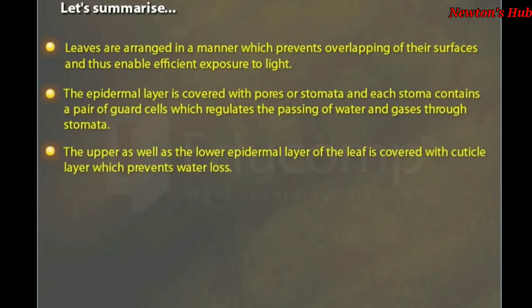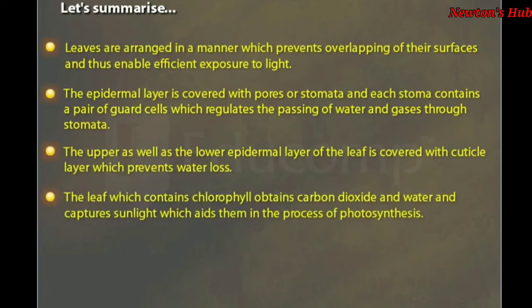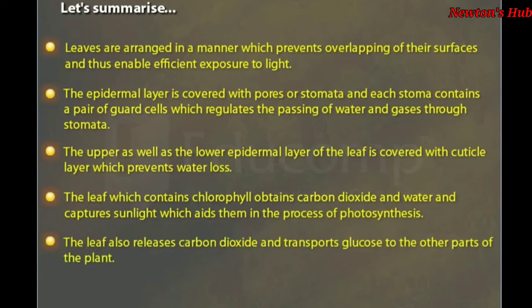The upper as well as the lower epidermal layer of the leaf is covered with cuticle layer which prevents water loss. The leaf which contains chlorophyll obtains carbon dioxide and water and captures sunlight which aids them in the process of photosynthesis. The leaf also releases carbon dioxide and transports glucose to the other parts of the plant.